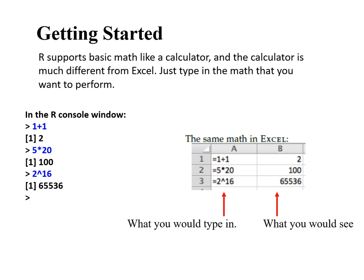R supports math just like a calculator, and the math is not much different from Excel — just type in the math you want to perform. You don't have to precede it with an equal sign, unlike Excel. In the R console, type 1+1 and get 2, 5*20, et cetera. It's exactly the same structure as you would have in Excel.